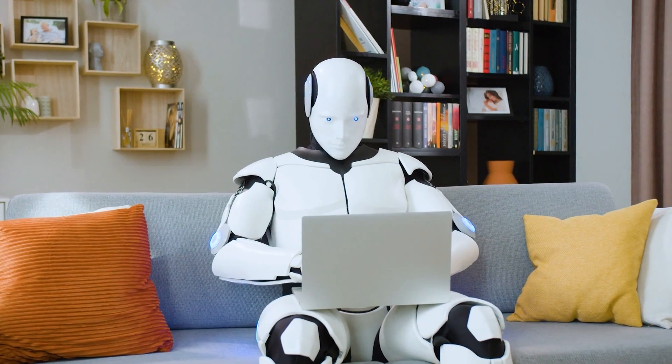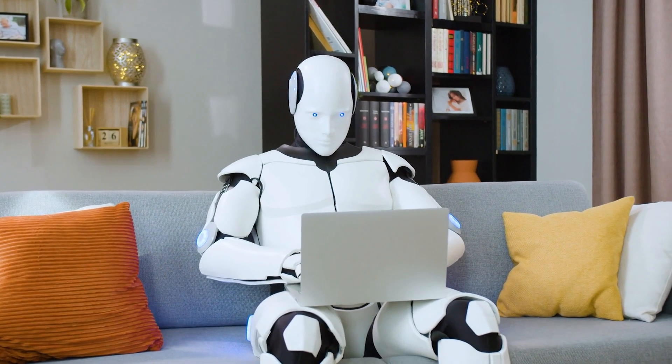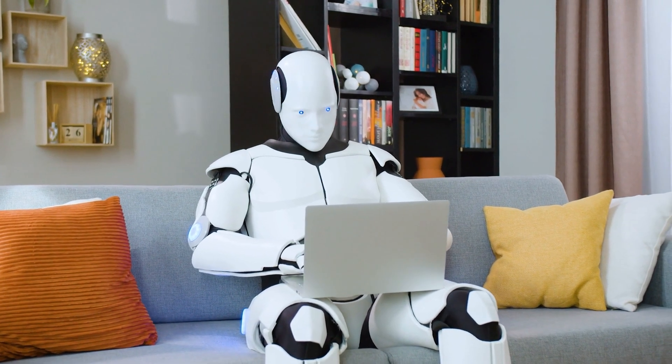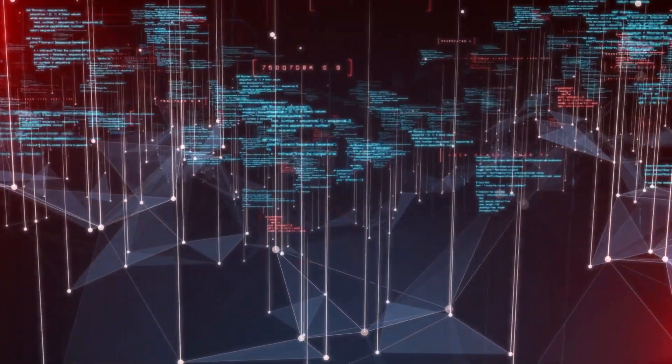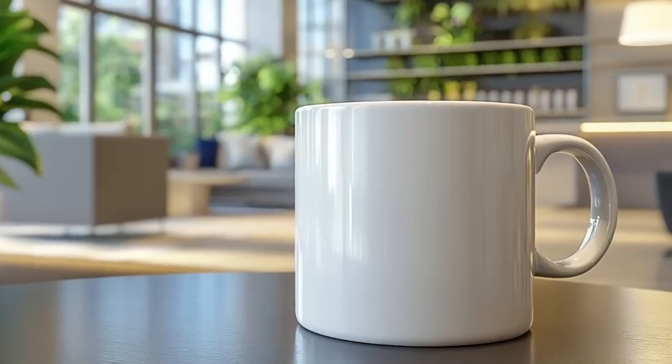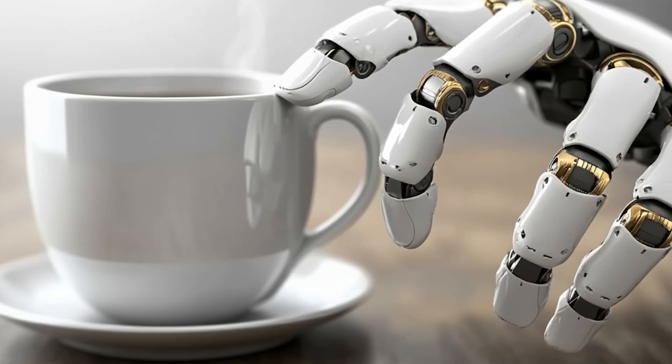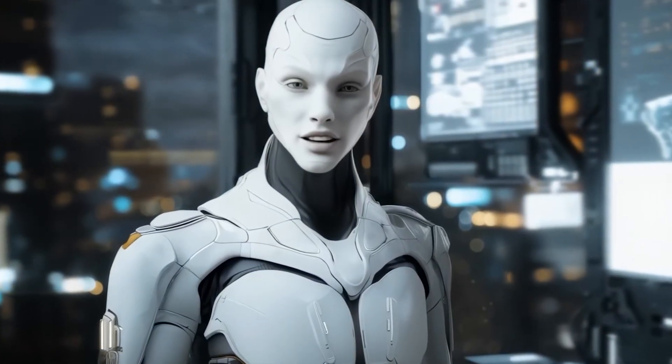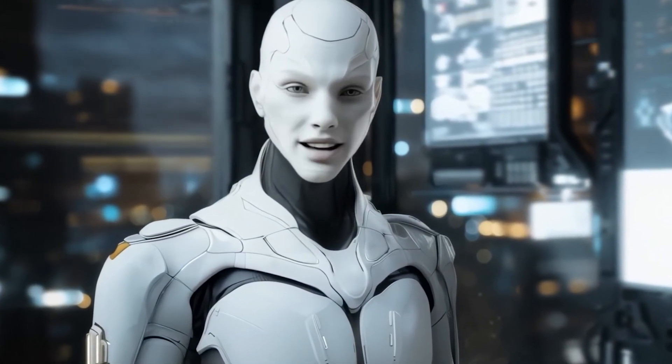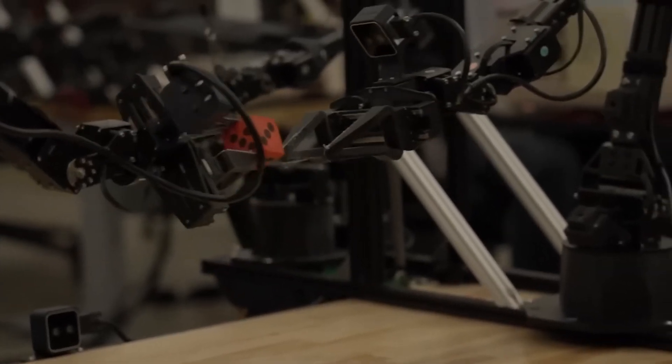Traditionally, robots need explicit programming for every little movement. Want a robot to pick up a cup? You'd have to program exactly how to approach it, where to grasp it, how much pressure to apply. It's exhausting. But with Gemini Robotics, you simply tell it, hey, could you grab that coffee mug and bring it over here? And it figures out all the details itself.